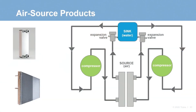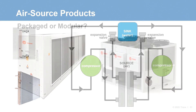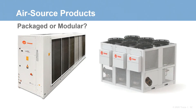So how does the energy contained in the ambient air get transferred to the load water? Pictured here is a generic refrigeration circuit for an air source unit. Ambient air is pulled across the face of the outdoor coil where the energy contained in it is absorbed into the refrigeration circuit. The compressor then adds heat and pressure to the refrigerant, and finally this heat is transferred to the water in the heat exchanger and pumped to the load. Air source heat pumps can come in packaged or modular configurations — let's look at some features of both.